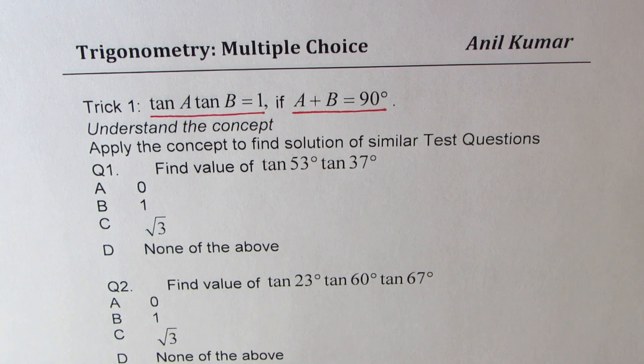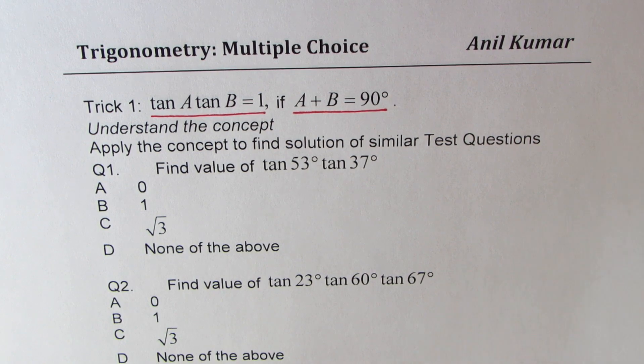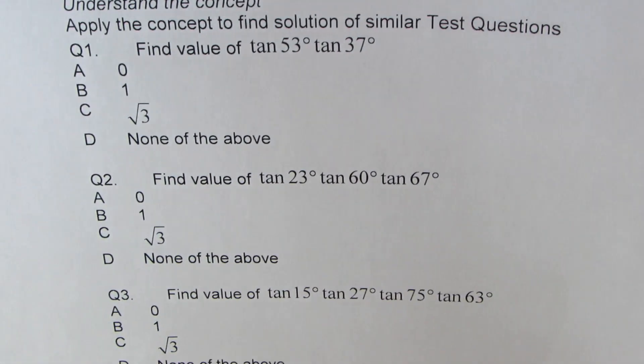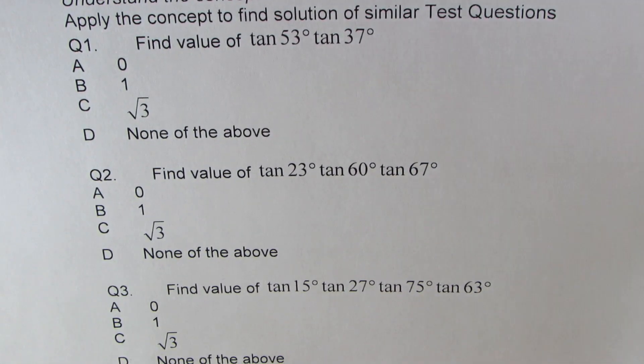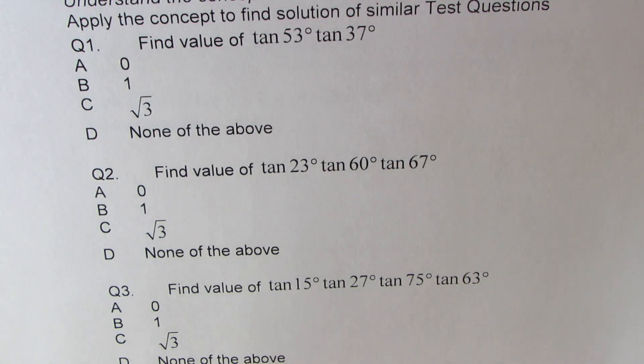Based on this concept, we could have many questions. Here are 3 questions for you. Find value of tan 53 times tan 37. Find value of tan 23, tan 60, tan 67. And the third question here is to find value of tan 15, tan 27, tan 75 and tan 63.